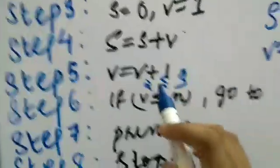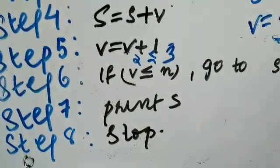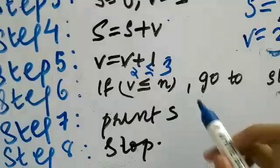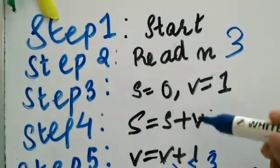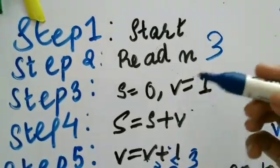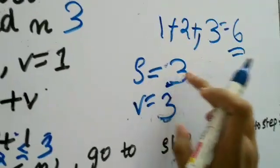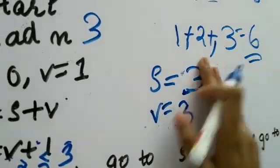3 is less than or equal to 3. Yes, 3 is equal to 3, right? So go to step 4. What does step 4 say? Step 4 says that, s is equal to s plus v. So the new s is, s plus v. 3 plus 3, 6.